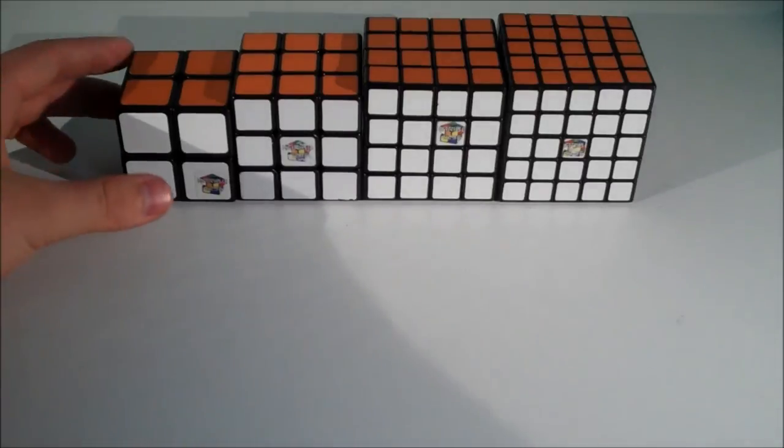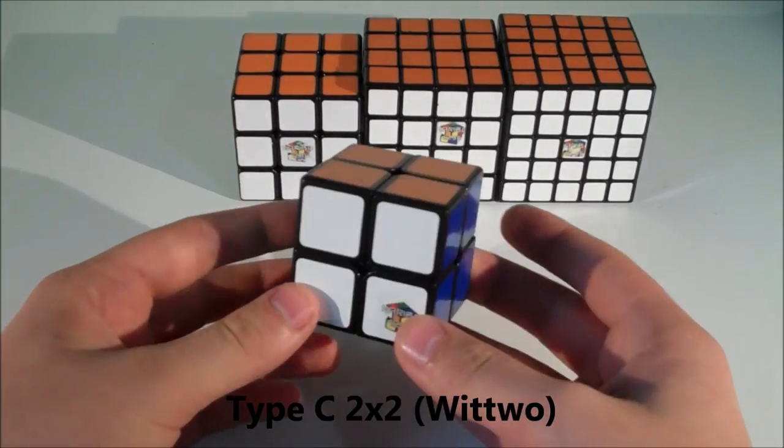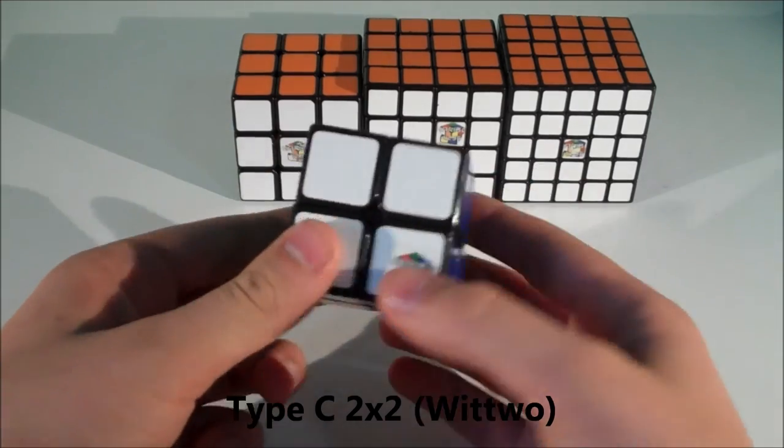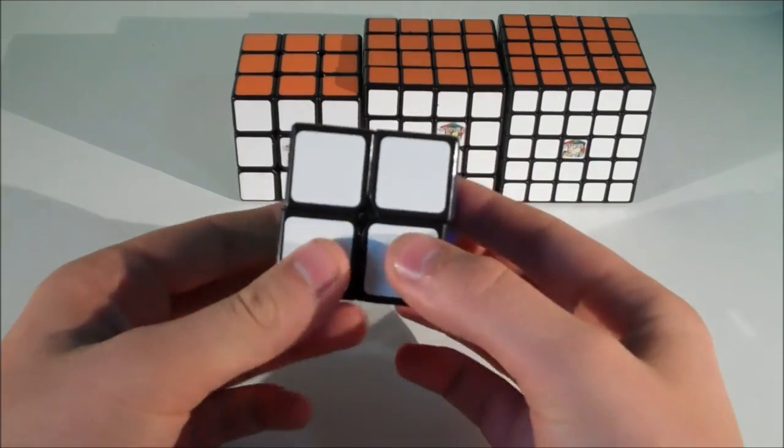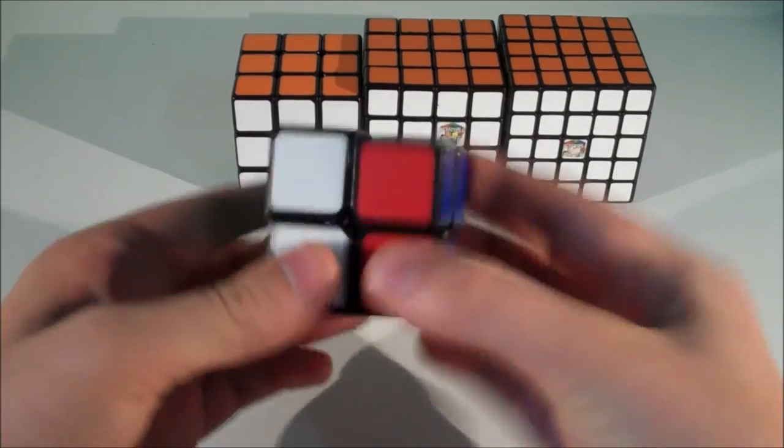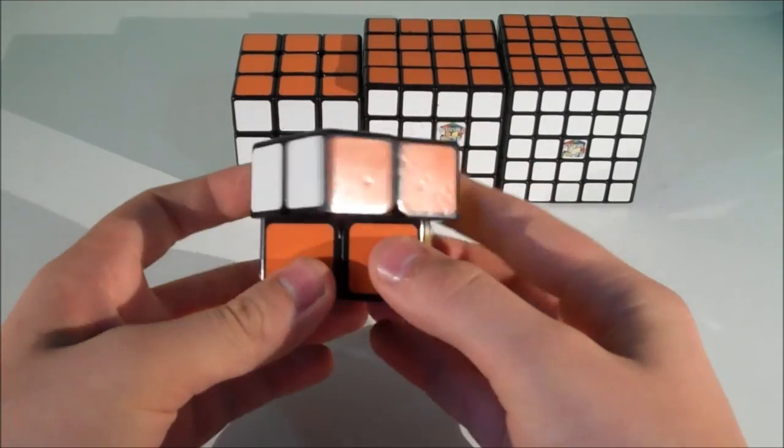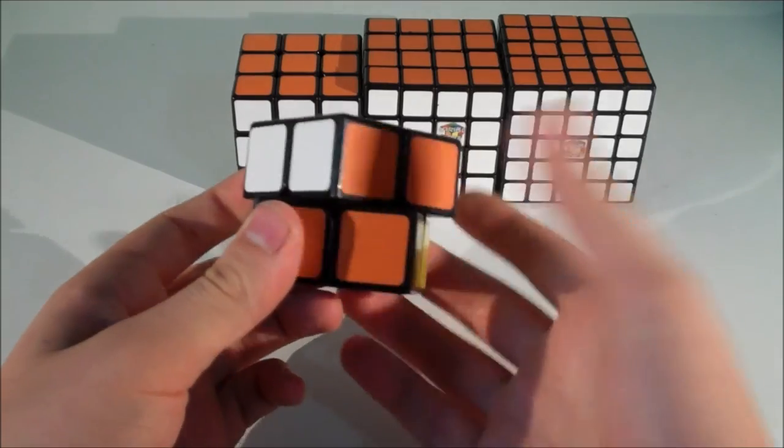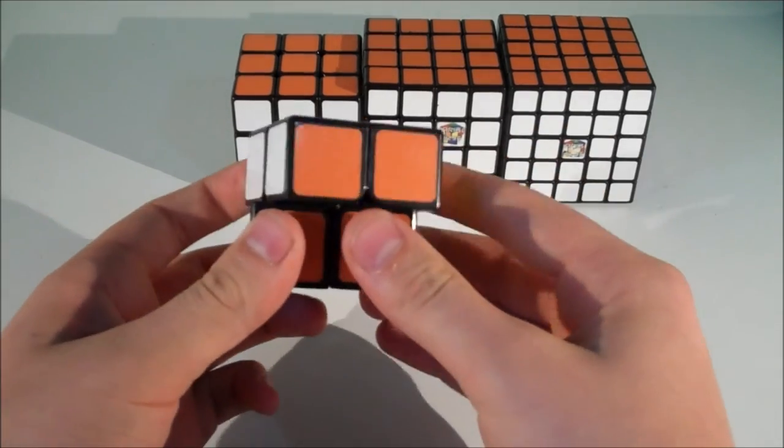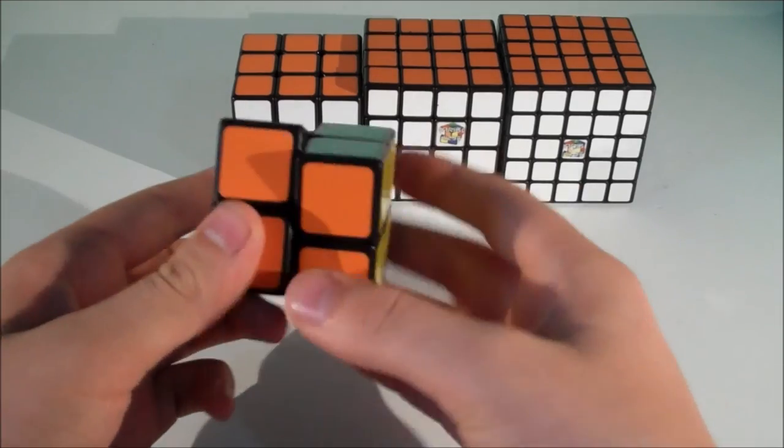So anyway, for 2x2 I'm using the Type C 2x2, or the Wit 2. This cube is really good and very fast. I just love the crisp feel to it and it feels so nice to solve. The corner cutting on this puzzle is really good - it can cut 45 degrees no problem and normally it can cut over, so it never locks up for me and it just solves really well.